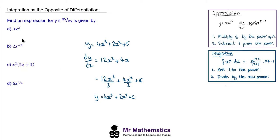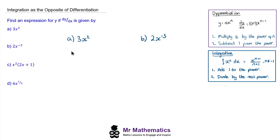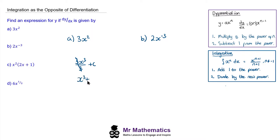Now we're going to integrate questions a to d with respect to x. For question a we have 3x². When we integrate this, we add 1 to the power of 2 to make 3, giving 3x³, then divide by the new power which is 3, and add the constant term. We can simplify because 3 divided by 3 cancels to make 1, so we have x³ plus c.